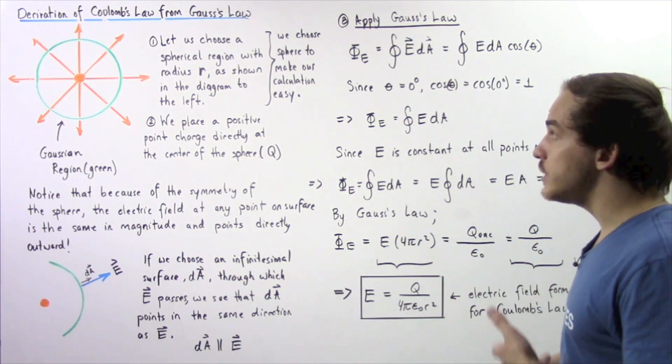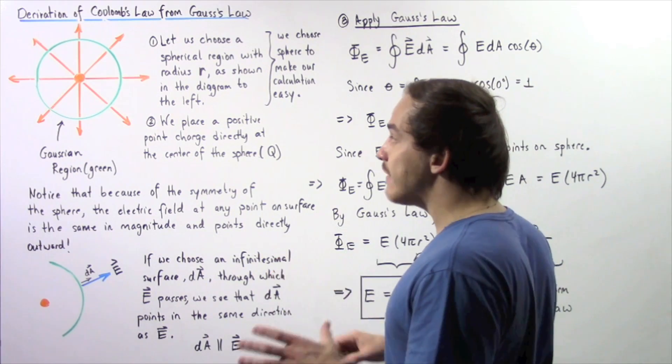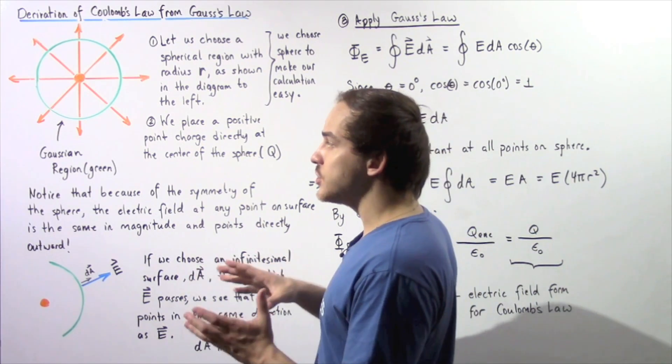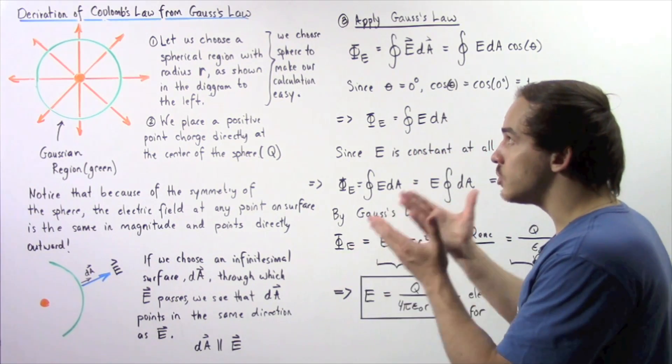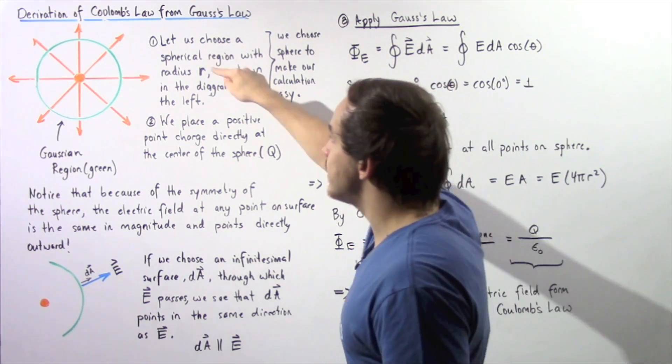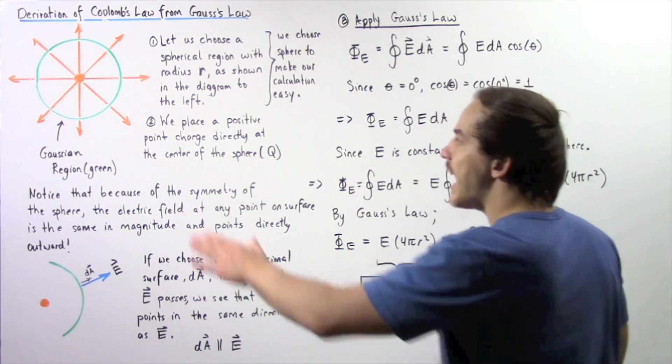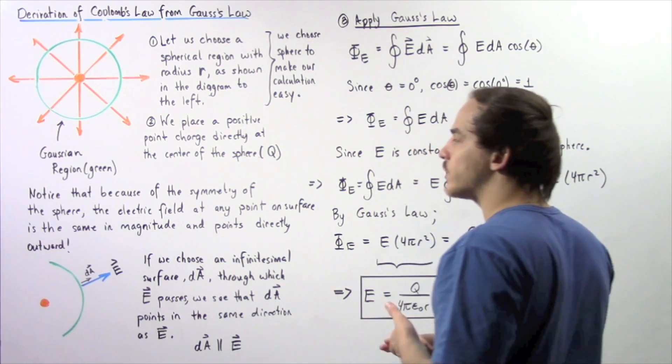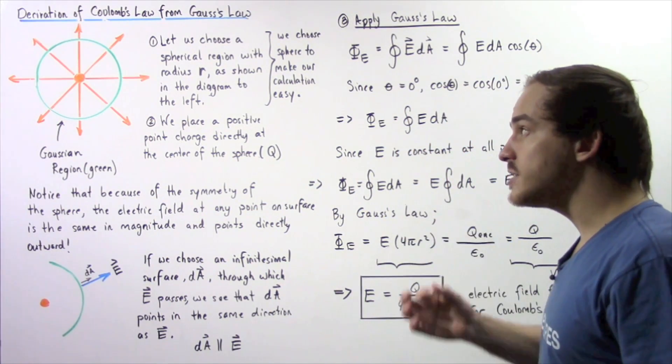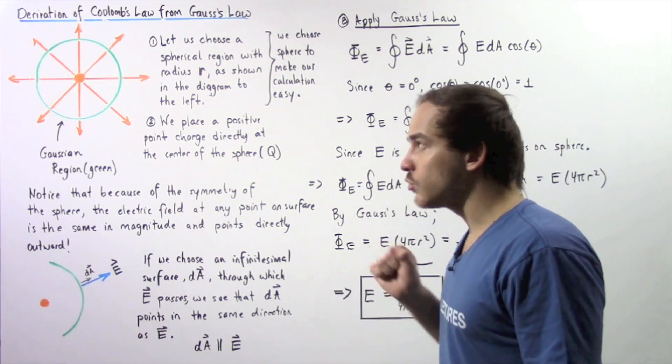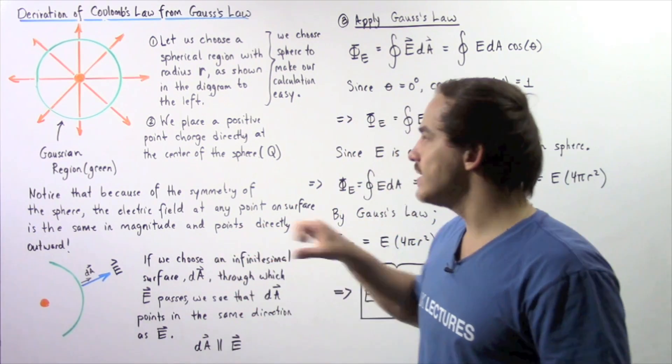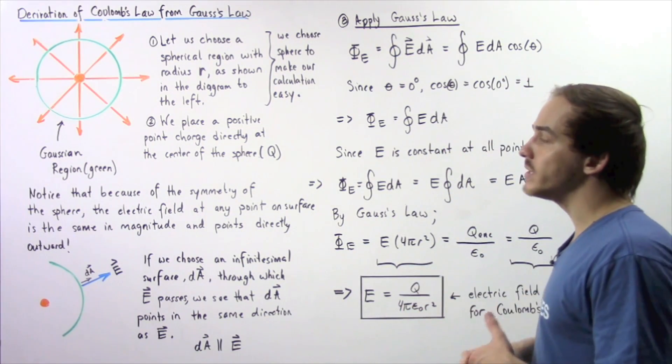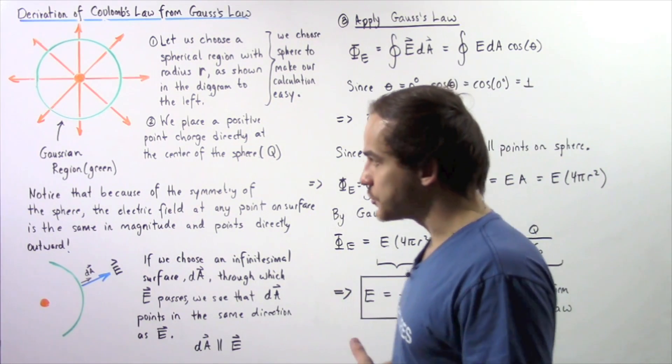In order to actually use Gauss's law, we have to choose a certain region of space. We choose a spherical region with radius given by lowercase r, as shown in the following diagram on the left. The reason we choose a spherical region is because a sphere has symmetry, and that will come in handy in just a moment in making simplifications.